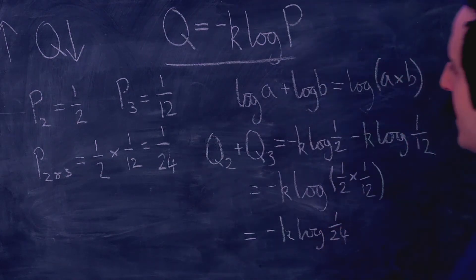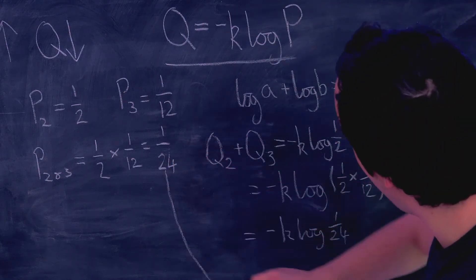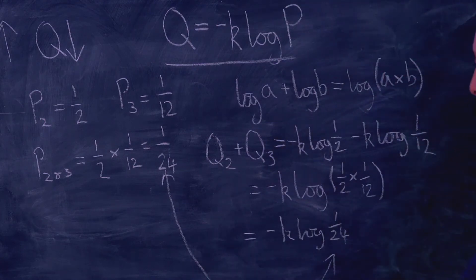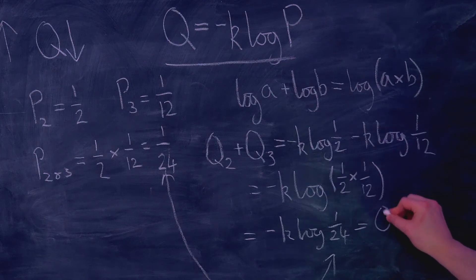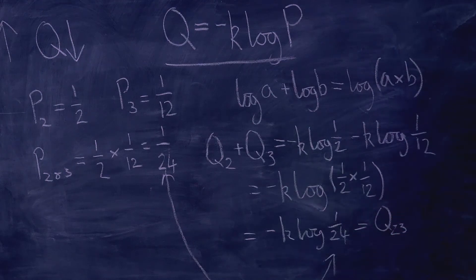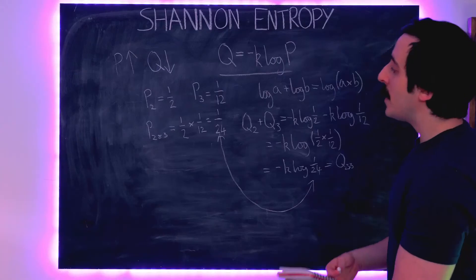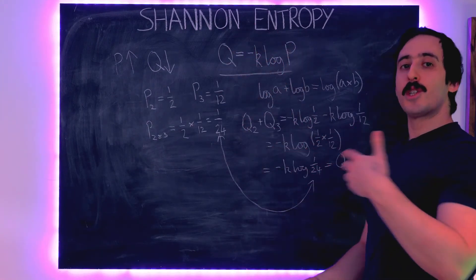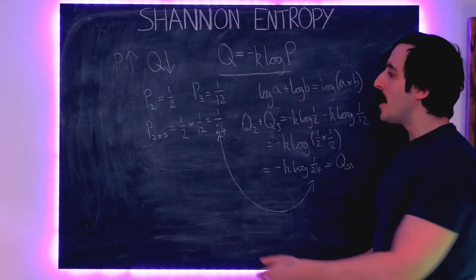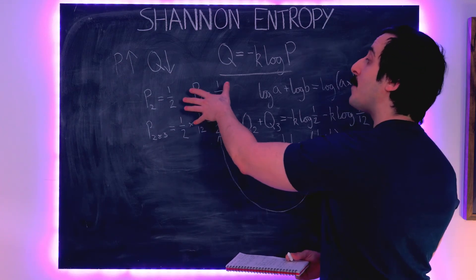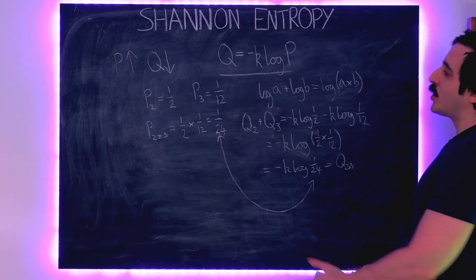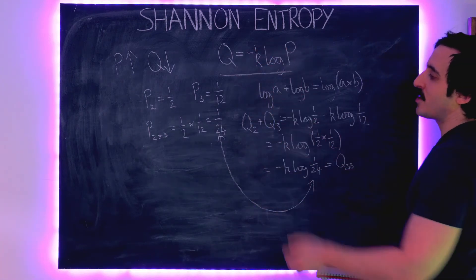This one over twenty-four equals the probability of statements two and three both being true, so Q2 plus Q3 equals Q2,3. The information content is additive because probabilities of independent statements combine multiplicatively, and the logarithm converts that multiplication into addition.